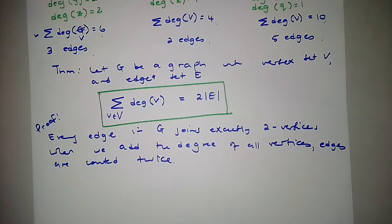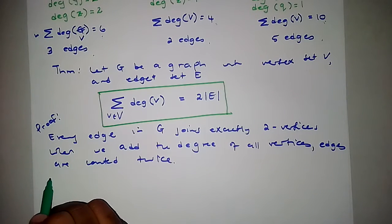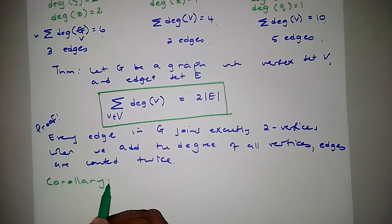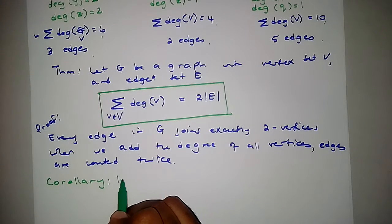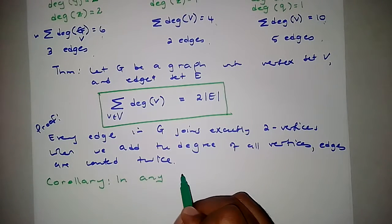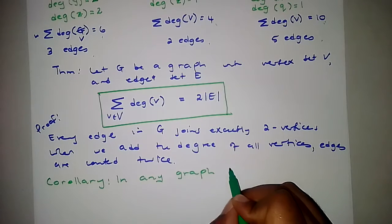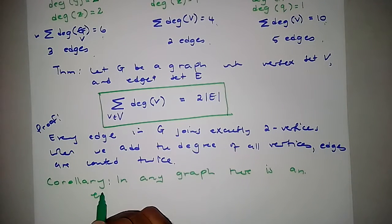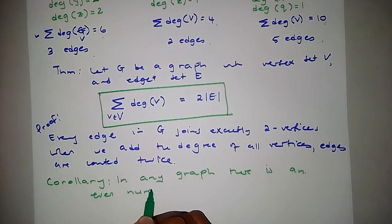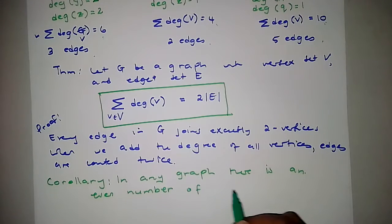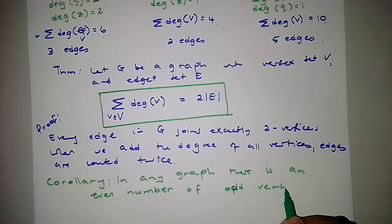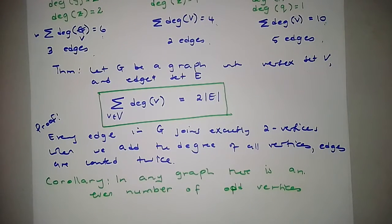Now let us look at the corollary. The corollary states that in any graph, there is an even number of odd vertices. We cannot just state things — we need to prove it.